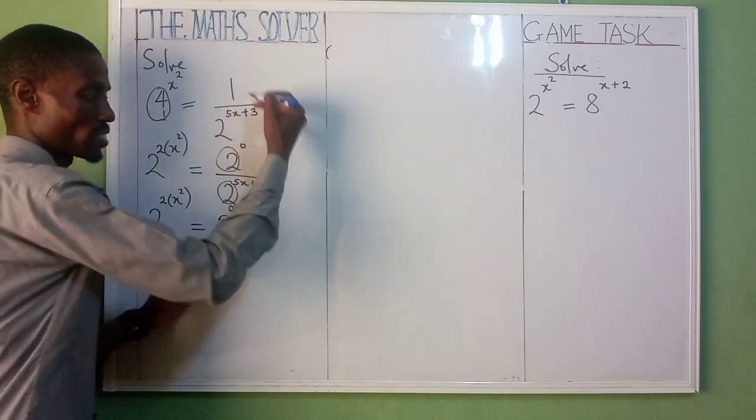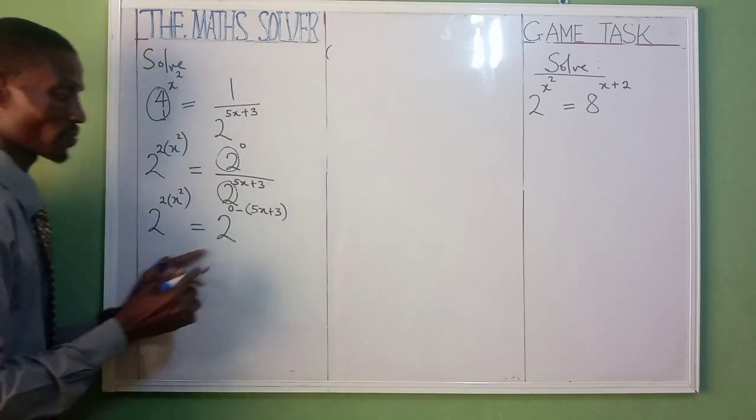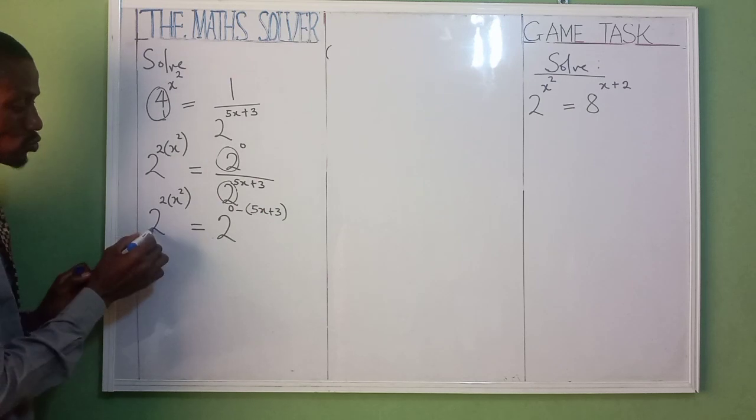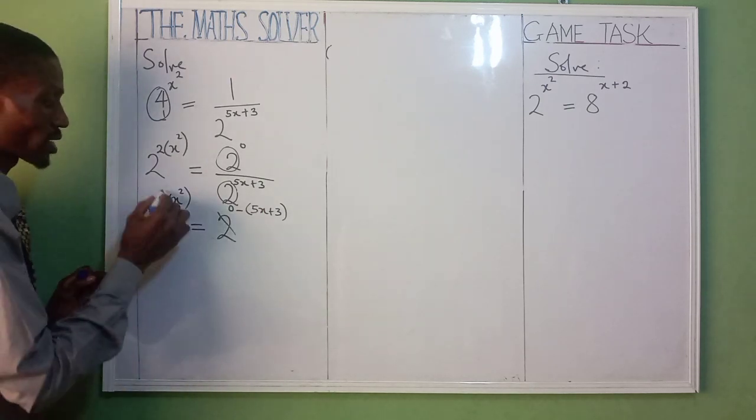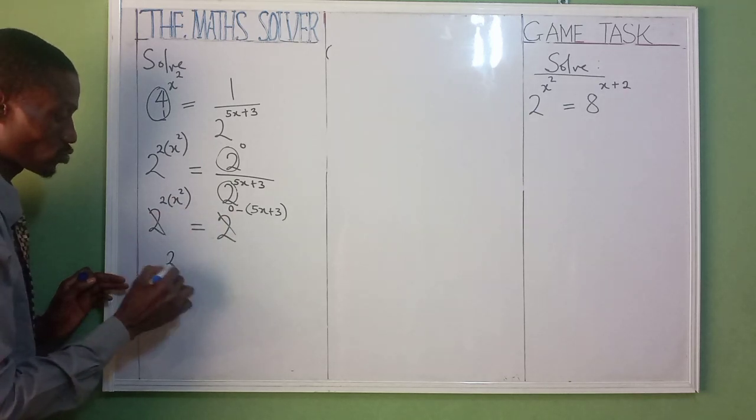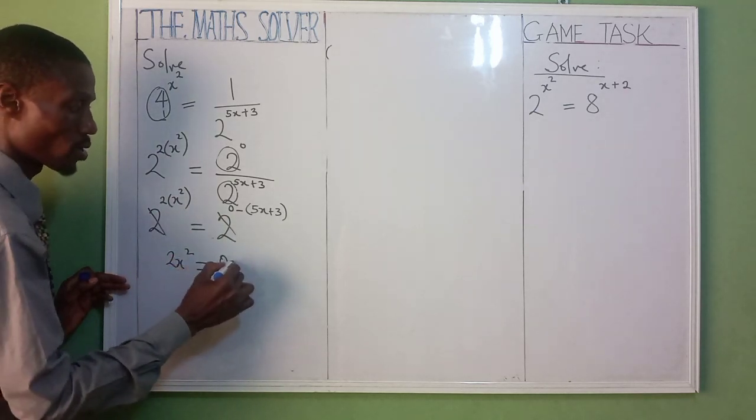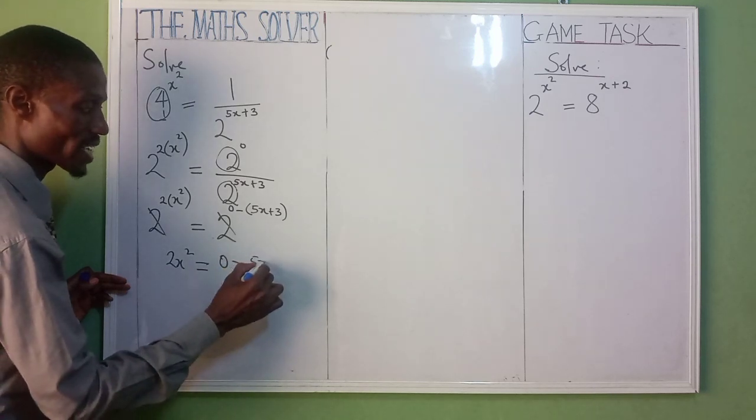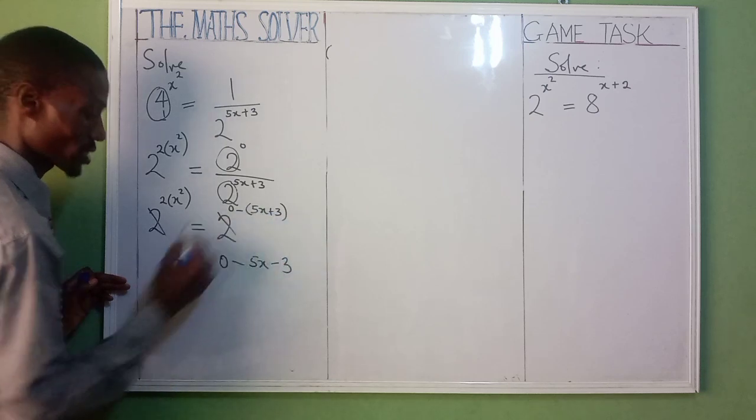Put this one in bracket, the one that you're bringing from down: 5x plus 3, you must put it in bracket. Now, as you can see, we have 2 and 2, so 2 cancels 2. Let's now put in a bracket: 2 times x squared, that's 2x squared, equal to 0 minus 5x minus 3. Because minus is going to affect the sign inside here.